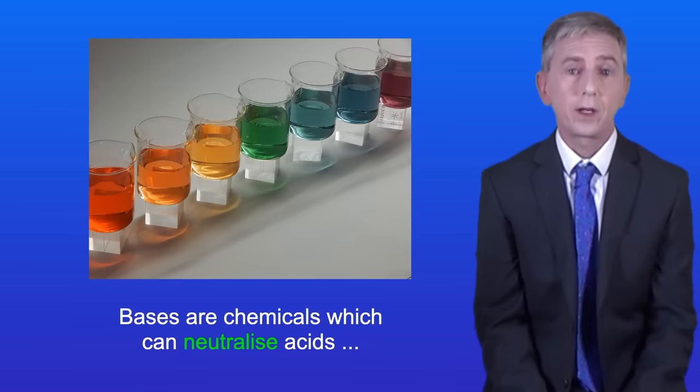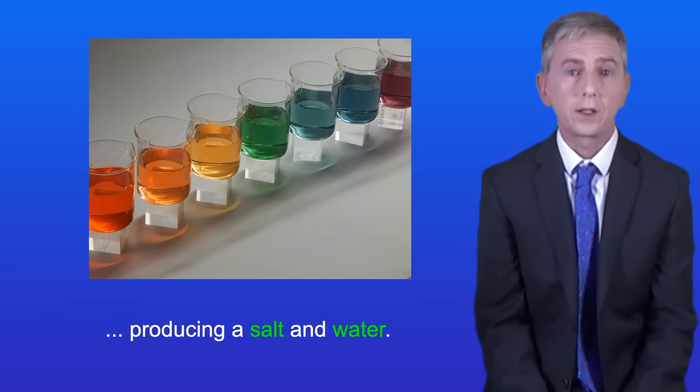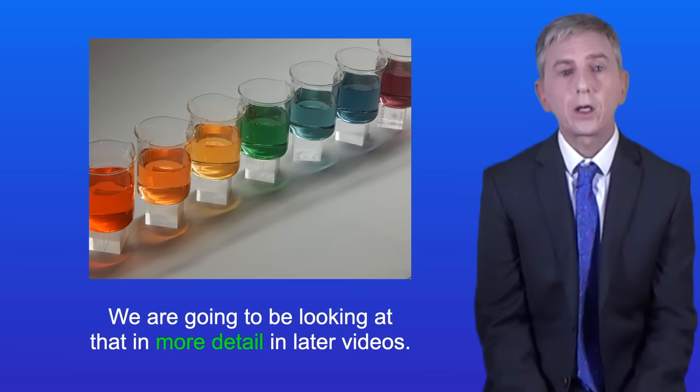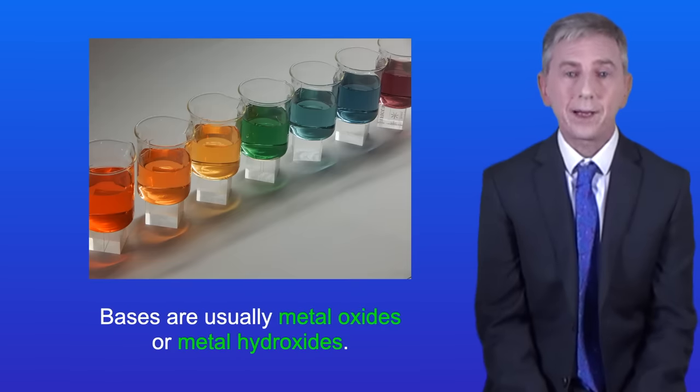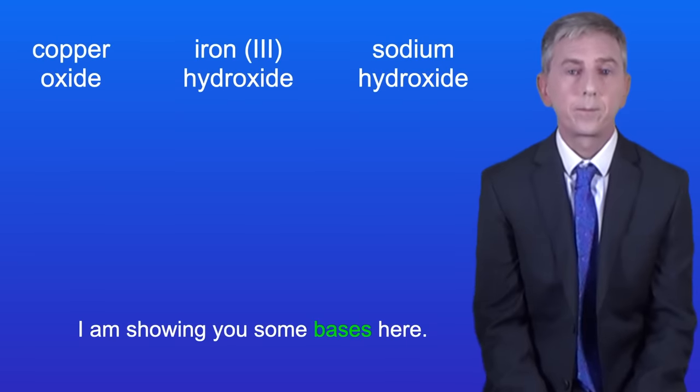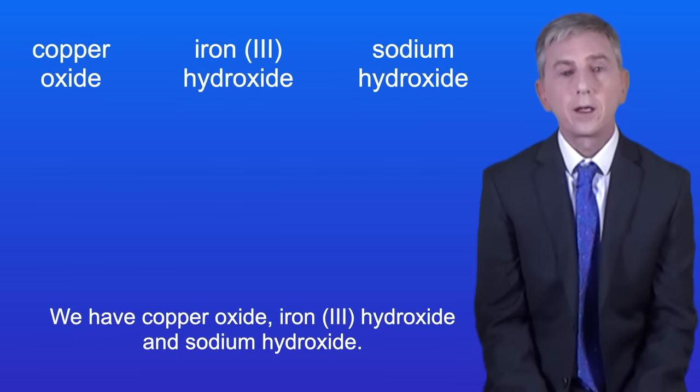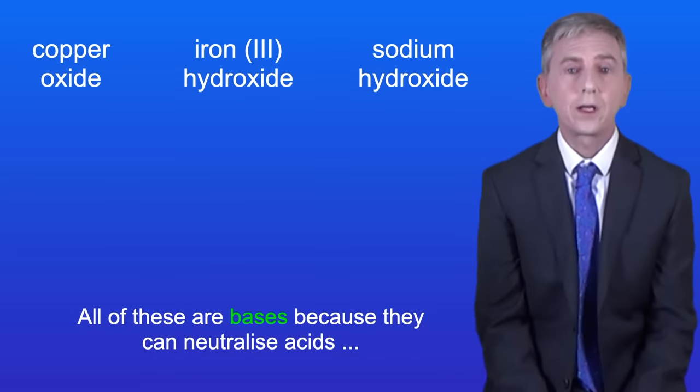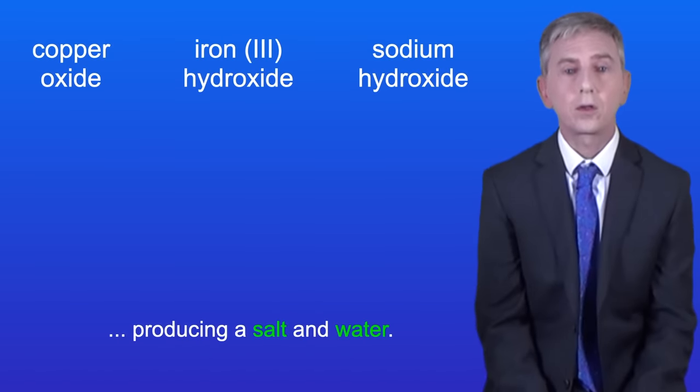Bases are chemicals which can neutralize acids producing a salt and water. We're going to be looking at that in more detail in later videos. Bases are usually metal oxides or metal hydroxides and I'm showing you some bases here. We've got copper oxide, iron 3 hydroxide and sodium hydroxide. All of these are bases because they can neutralize acids producing a salt and water.